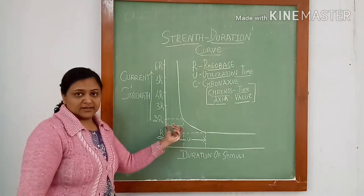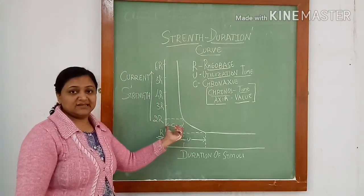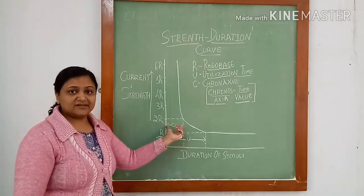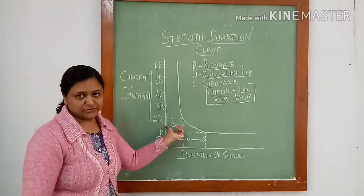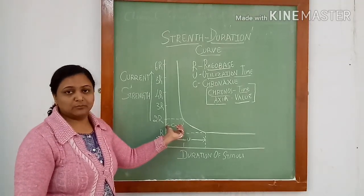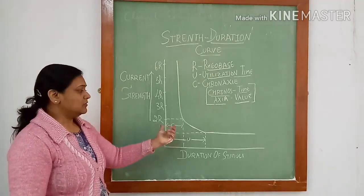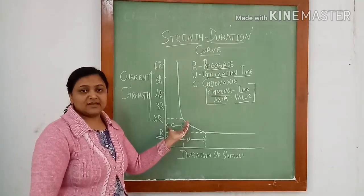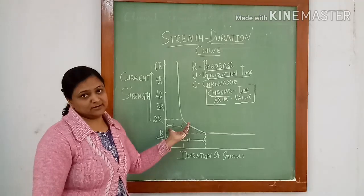Chronaxie in case of nerve fiber is the least, that is it is highly excitable tissue than any other tissue like muscle tissue. So this chronaxie can be used in clinical application.